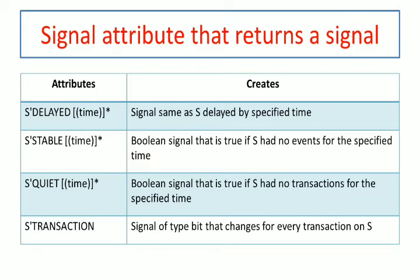If s has no transaction, it indicates that the values are not going to be changed, and if the values are not going to be changed, we can automatically suspend the operation — this can be handled using s'quiet. Next, s'transaction creates a signal of type bit that changes for every transaction on s — that means every time the value changes from 0 to 1. A transaction means the previous values remain the same for a given specific amount of time. In this way, one can define signal attributes that return a value or return a signal.